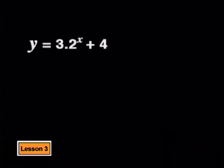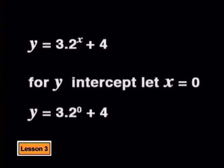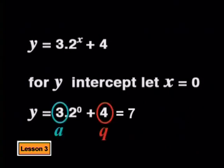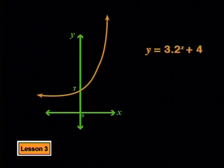Now we can return to what we noticed about the a value affecting the y-intercept. If we consider a graph such as y equals 3 times 2 to the power of x plus 4, can we predict the y-intercept? The y-intercept is at x equals 0, so y equals 3 times 2 to the 0 plus 4, which is 7. It seems that the y-intercept can be found by adding the a value and the q value. The graph does have a y-intercept of 7 — you should check more examples of this for yourself.